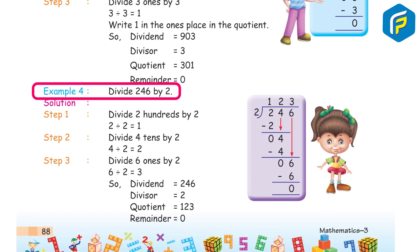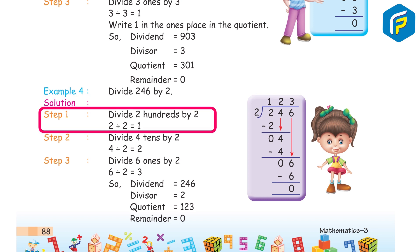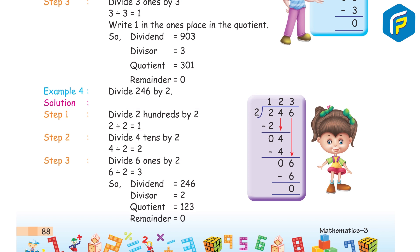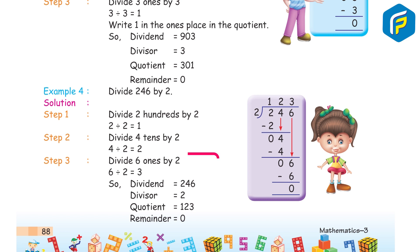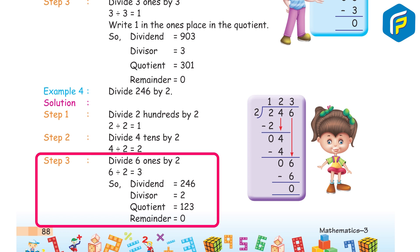Example 4: Divide 246 by 2. Step 1: Divide 2 hundreds by 2 — 2 ÷ 2 = 1. Step 2: Divide 4 tens by 2 — 4 ÷ 2 = 2. Step 3: Divide 6 ones by 2 — 6 ÷ 2 = 3. So, dividend 246 ÷ divisor 2 = quotient 123, remainder 0.